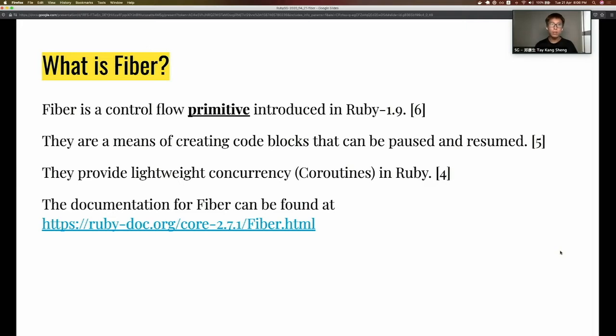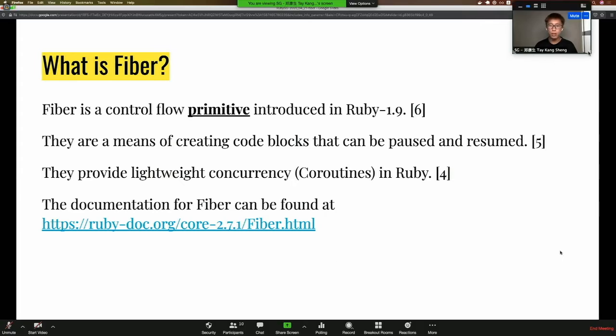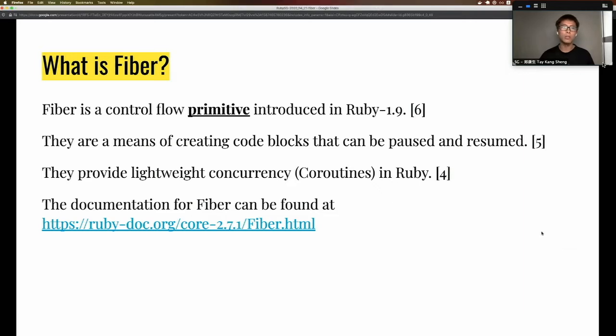Fiber is Ruby's solution to lightweight concurrency or coroutines. Because Fiber is a primitive provided by the language, you can find the documentation on ruby.org, just like you find String, Integers, and Arrays.